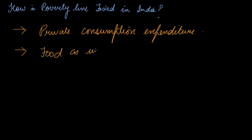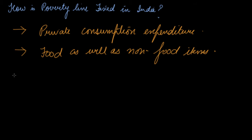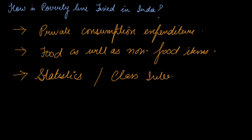Food as well as non-food items are considered. Food items means your rice, wheat, and what you eat. Non-food items means health facilities and education — are you able to provide education to your children, or during illness are you able to spend on health facilities? If yes, then you are non-poor; if no, then you are below the poverty line. Frequencies are then recorded against each class interval indicating a particular level of consumption, and each frequency counts the number of households belonging to that particular consumption class. We take statistics into consideration, make class intervals, and assign frequencies according to the data collected.